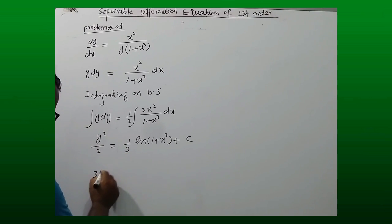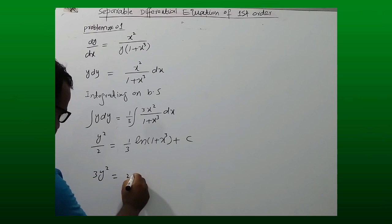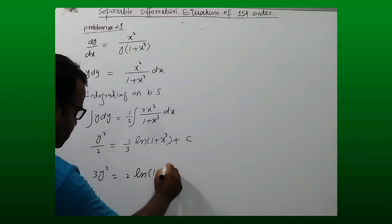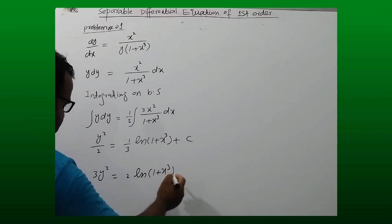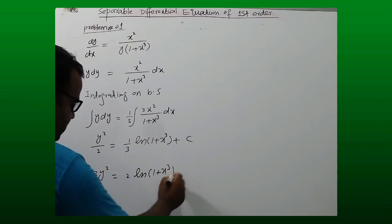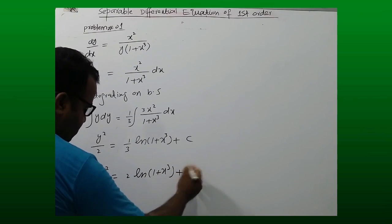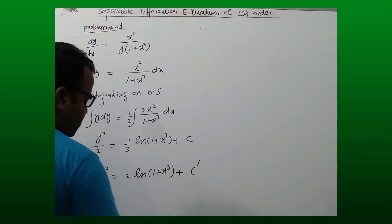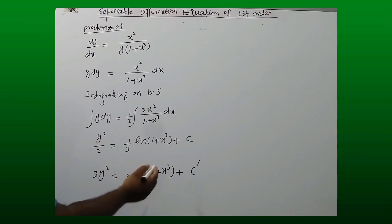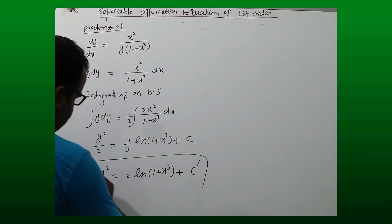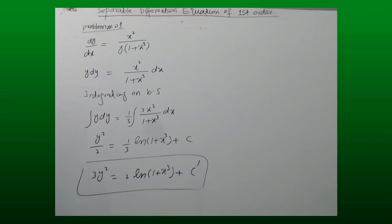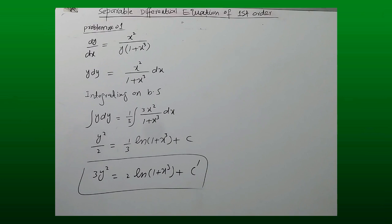Multiplying both sides by 3, we get 3y squared equal to 2 times the natural log of 1 plus x cubed. Multiplying 2 with c gives another constant, which we call c-dash. This is the solution of the first-order differential equation by separating the variables. Thank you.